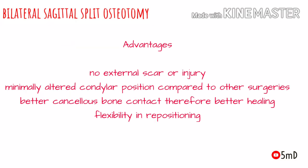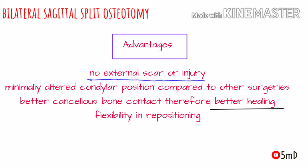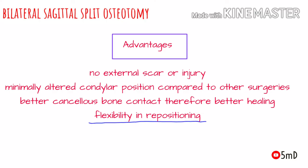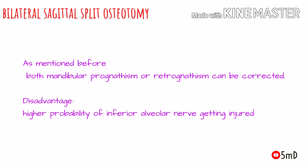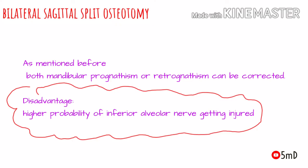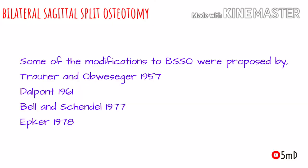There are many advantages of BSSO: there is better healing with cancellous bone contact, no external scar or injury as it is an intraoral procedure, and greater flexibility in repositioning the distal tooth-bearing segment — whether for treatment of prognathism or retrognathism. However, the main disadvantage is the higher chance of injury to the inferior alveolar nerve. There were also many modifications proposed to the initial procedure, which are enlisted below.